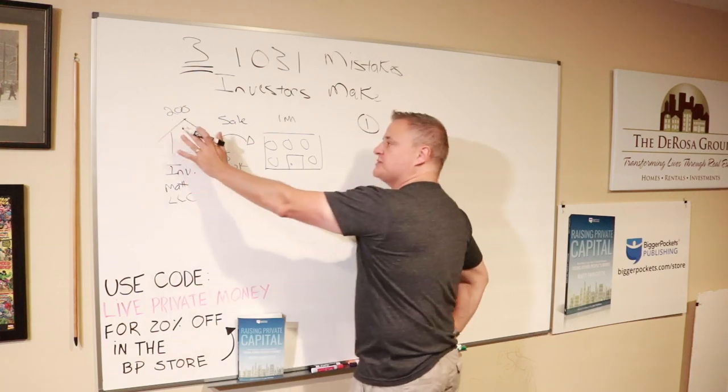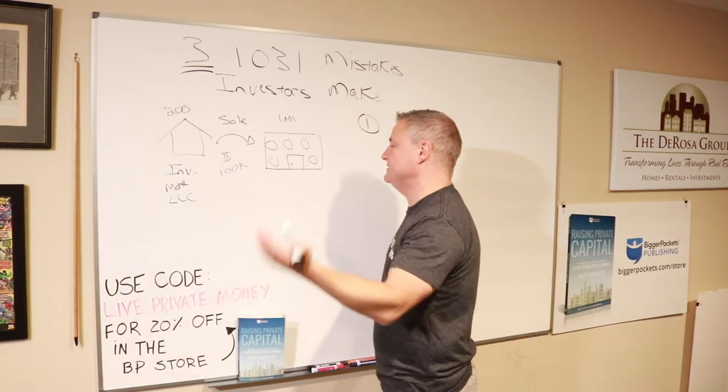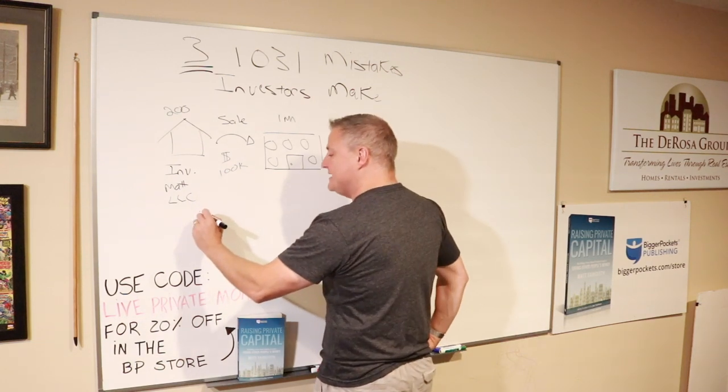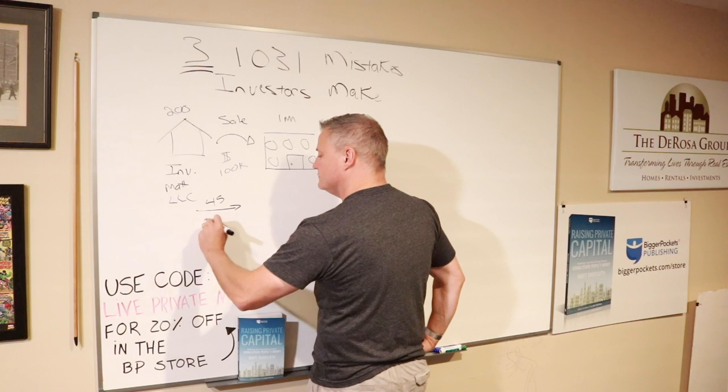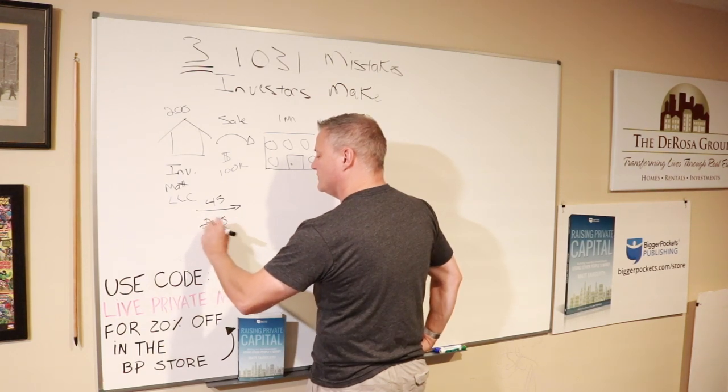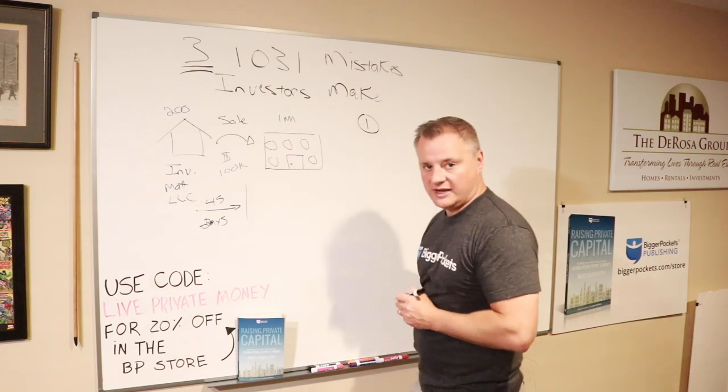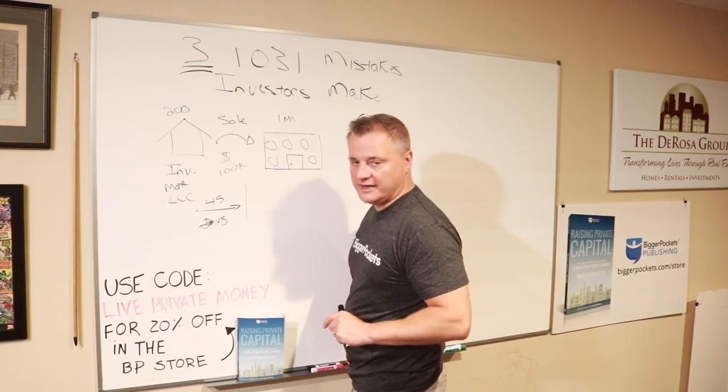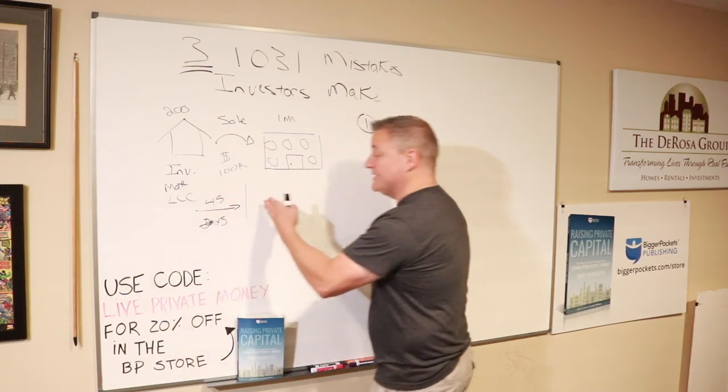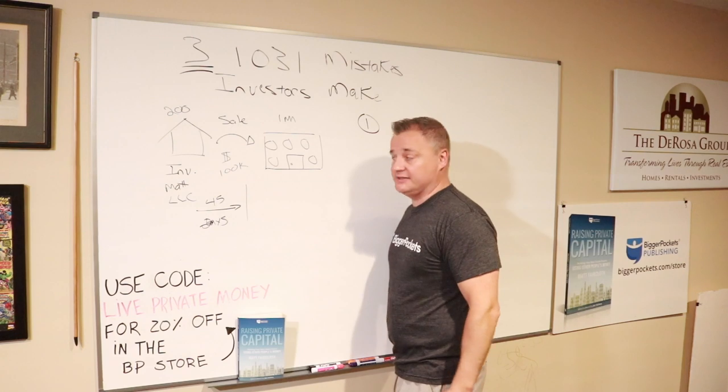Something that should get noted that falls into mistake number one. When I sell this property, day of closing, let's say I sell it on January 1st, 2019, I then have 45 days that I have to identify the new property.